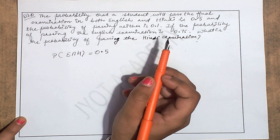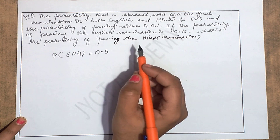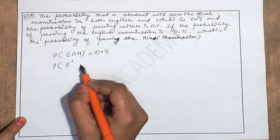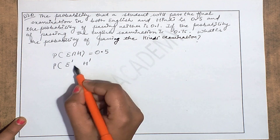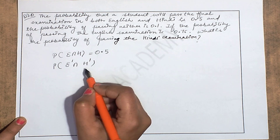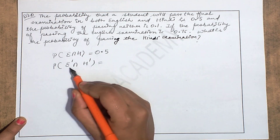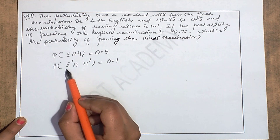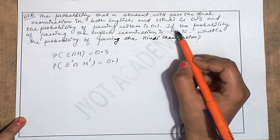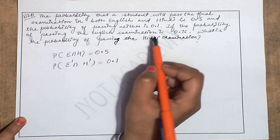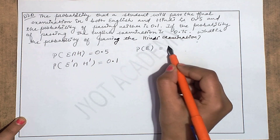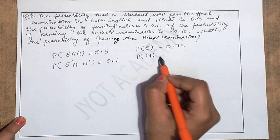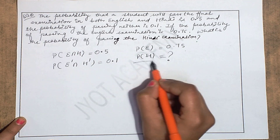The probability of passing neither English nor Hindi — neither condition is satisfied — so intersection is applied with 'not' on both. P(E' ∩ H') is given as 0.1. If the probability of passing the English exam is 0.75, find the probability of passing the Hindi exam.